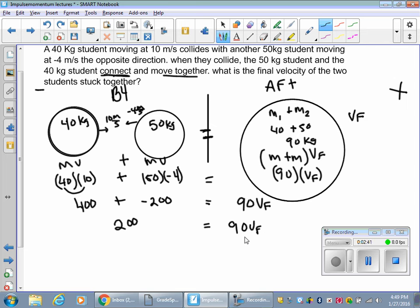How do I get rid of this 90 times v final? Divide by 90. Very good. I knew you could do it. Divide by 90, 200 divided by 90. It's going to be a positive value, right? 2.2 meters per second.